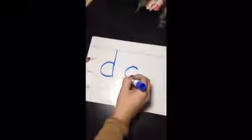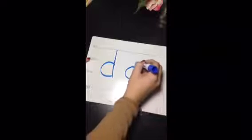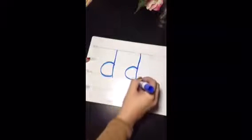D is a plain line round letter, so it starts on the plain line. We're going to go around to the grass line, all the way up to the skyline, and trace back down to the grass line. Start on the plain line, go around to the grass line, up to the skyline, trace back down to the grass line.